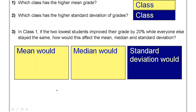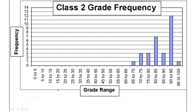The first question: which class has a higher mean grade? Hold up one finger if you felt like class 1 had the higher mean. Hold up two fingers if you felt like class 2 has a higher mean. Almost everybody voted for class 2. That's correct. Can anybody tell me why you said class 2 had the higher mean? What are you looking at when you look at the graph?